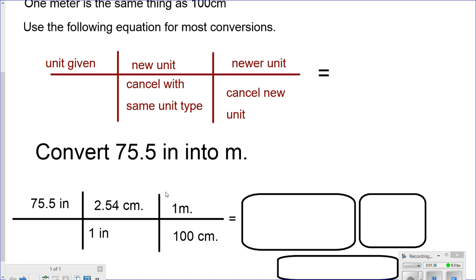I know that the conversion factor of inches to centimeters is 2.54. So I cancel inches with inches at the bottom, which is one inch, and I go to 2.54.